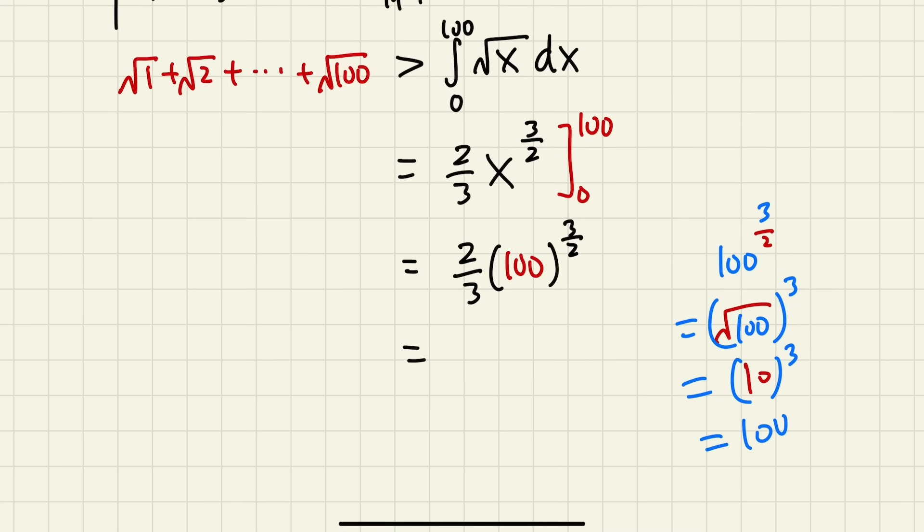We will end up with a thousand, so we will have 2 over 3 times a thousand. And you bet, yes, exactly: 2 over 3 times a thousand.